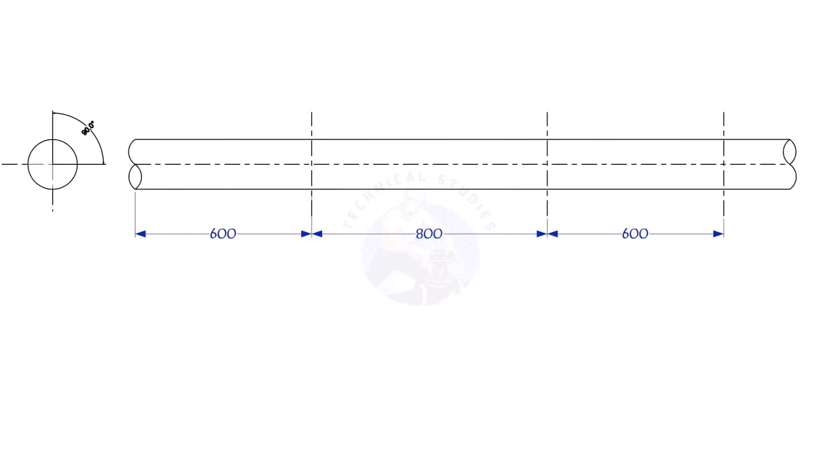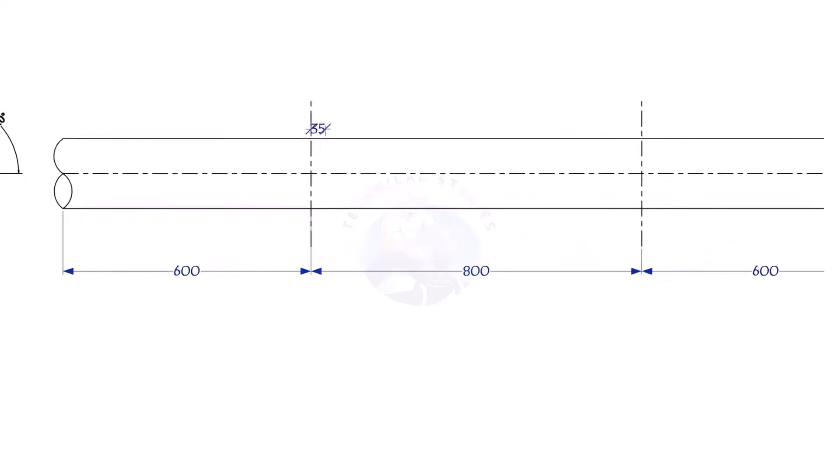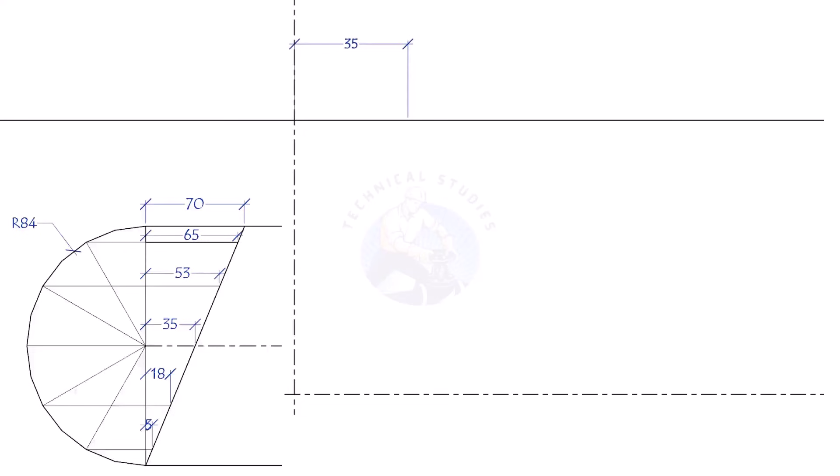On the top side line, mark 35mm to the right, and on the bottom side line, mark 35mm to the left. Draw a smooth curve connecting these points.